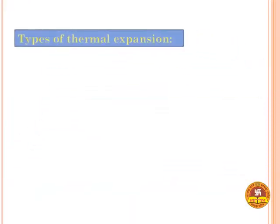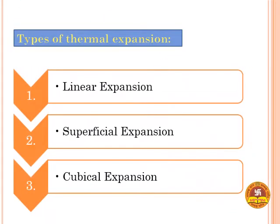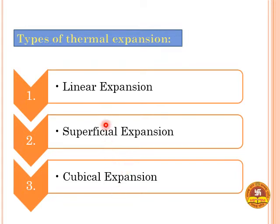Now we will discuss the types of thermal expansion — that is, the classification of thermal expansion. There are three types: the first is linear expansion, the second is superficial expansion which is the expansion of surface area, and the third is cubical expansion which is the expansion of volume. We will discuss these three one by one.